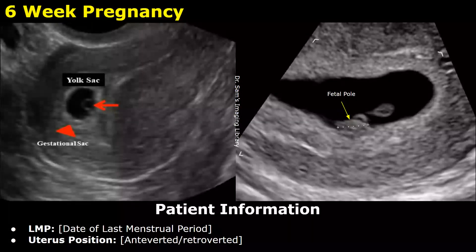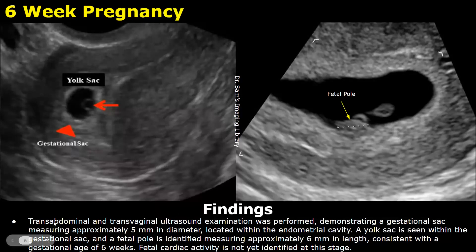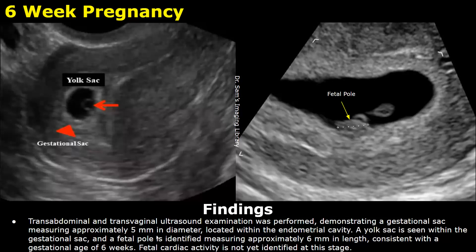Here is an example report of a 6-week pregnancy. We write the patient information first, which will include the LMP and the uterus position. You can also start the report by writing the approach: transabdominal and transvaginal ultrasound examination was performed, demonstrating a gestational sac measuring approximately 5 millimeters in diameter located within the endometrial cavity. A yolk sac is seen within the gestational sac and a fetal pole is identified measuring approximately 6 millimeters in length, consistent with a gestational age of 6 weeks.